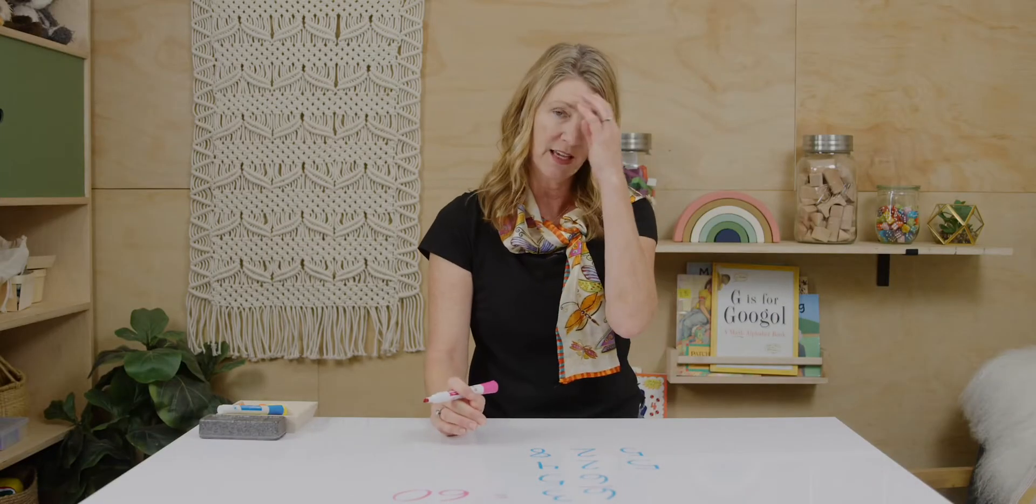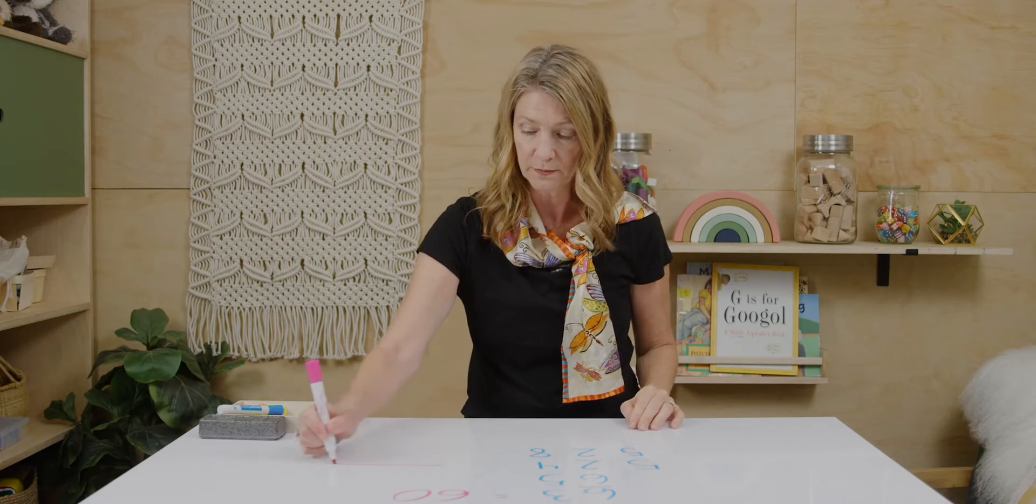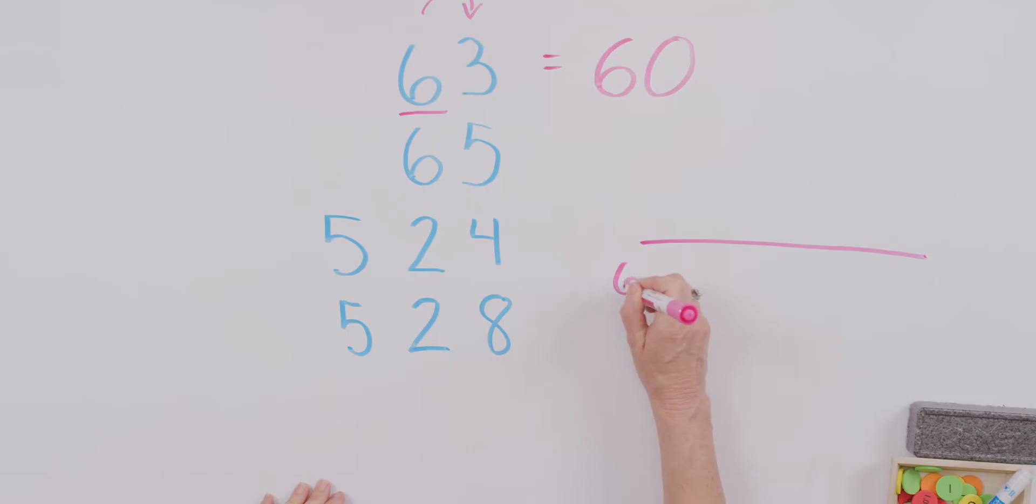Another way we can think about is to visualize it on a number line. If we have sixty here and seventy here, this would be sixty-five. Everything on this side of the number line, sixty-one, sixty-two, sixty-three and sixty-four, would round down to sixty. Everything on this side, sixty-six, sixty-seven, sixty-eight, sixty-nine, would round up to seventy. And you've got the adding one more to this digit and the zero in that column.